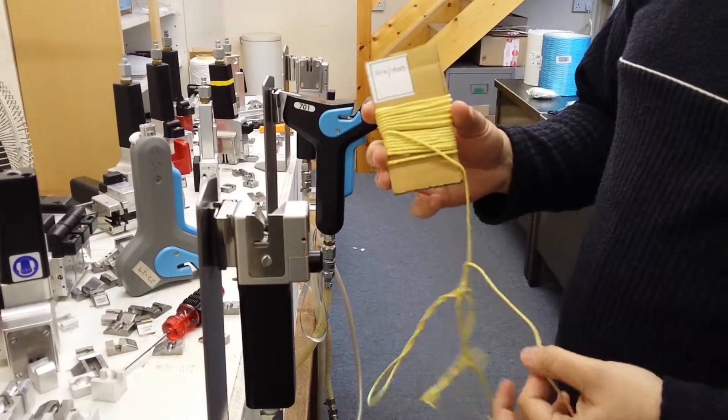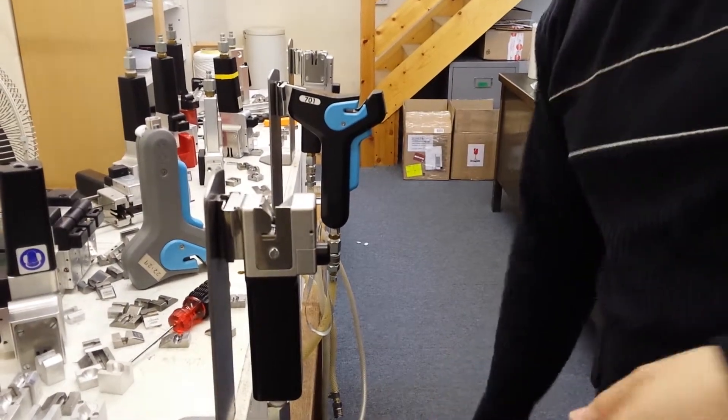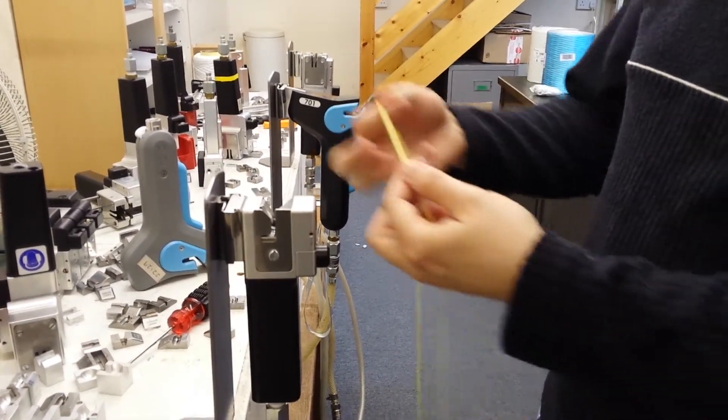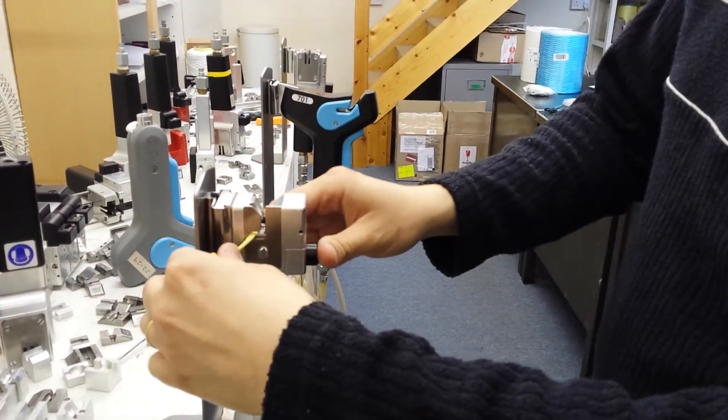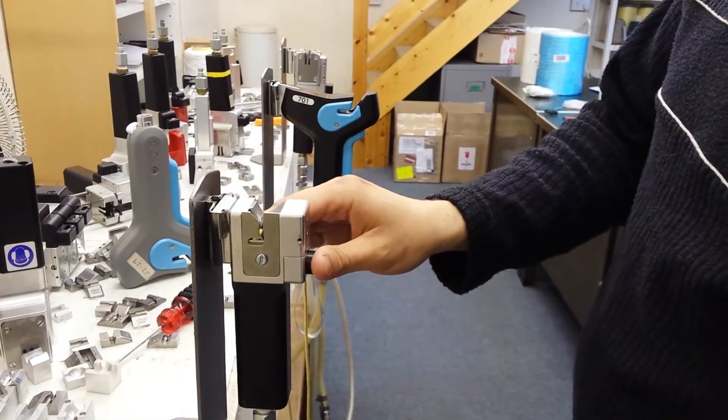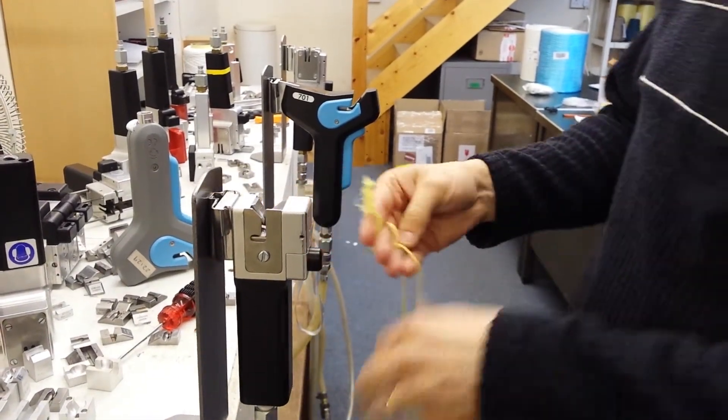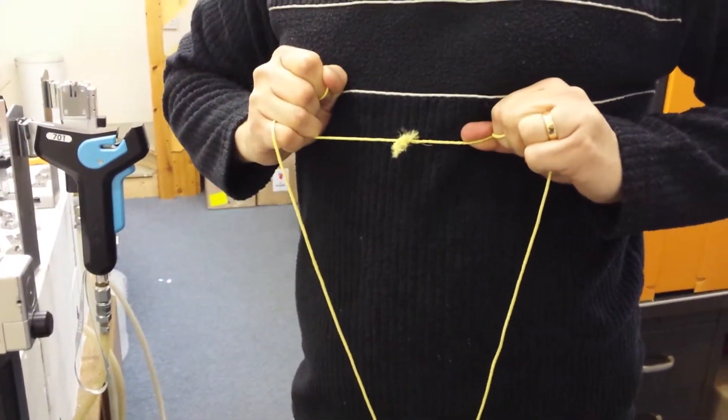Hello, here is the splice demonstration on the Kevlar 3x4 1500 denier using the Model 105. You place both yarn ends in together, you close the chamber pad, you cut away the waste ends, push the button, draw the yarn out of the chamber and you're left with a very strong joint.